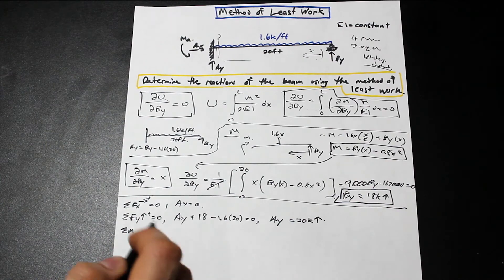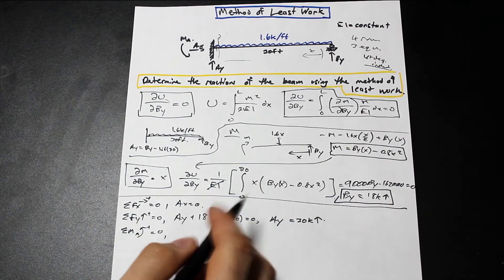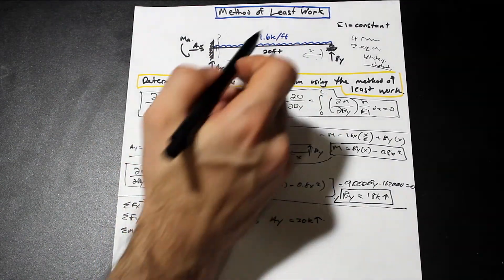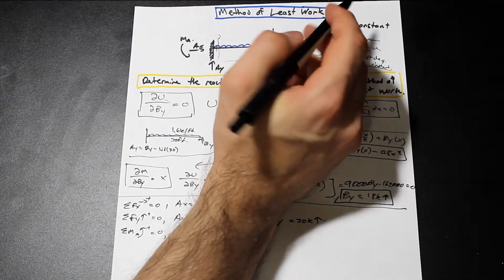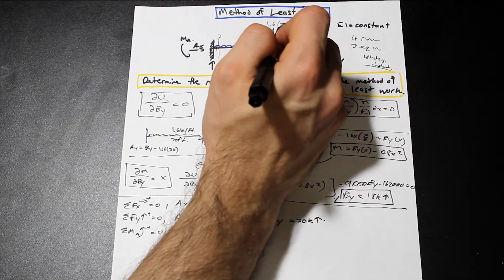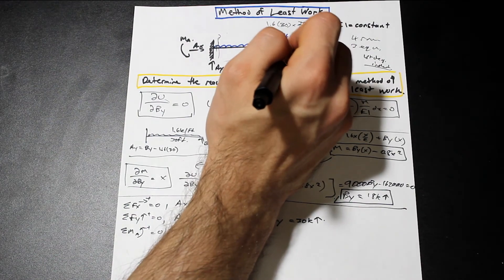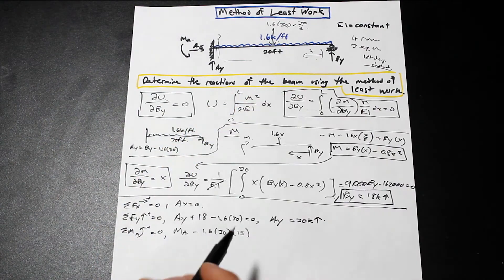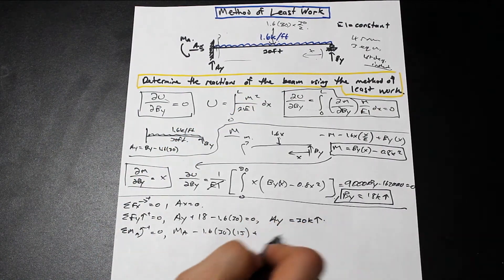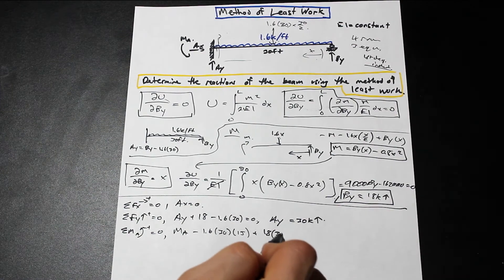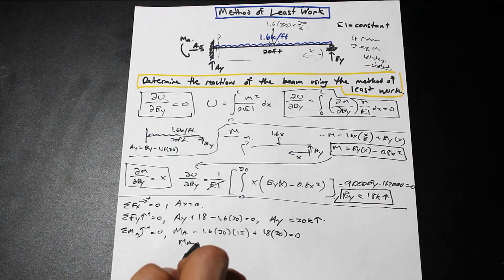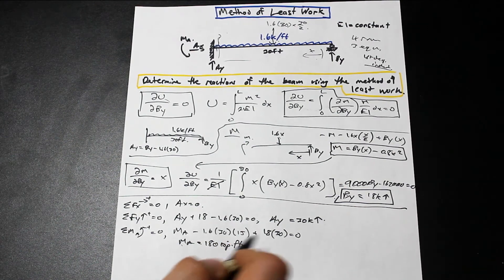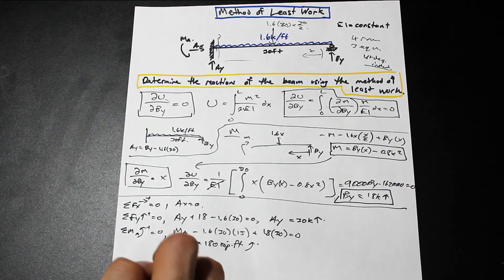And if we take the sum of the moments about A equal to 0, we're going to get that we have MA. We have this 1.6 kip force acting here, so that's going to be 1.6 times 30 times 30 over 2, and that's in the negative direction. And we have BY. We know what BY is now. BY is 18, and that's times 30. MA, our reaction, is 180 kip feet, and it is counterclockwise. There we go.